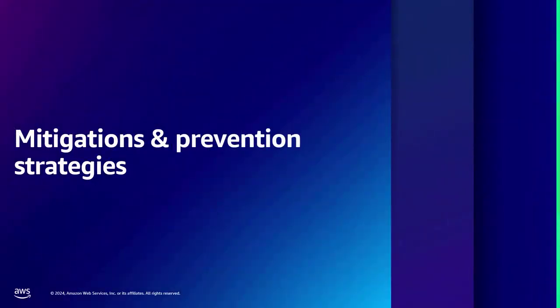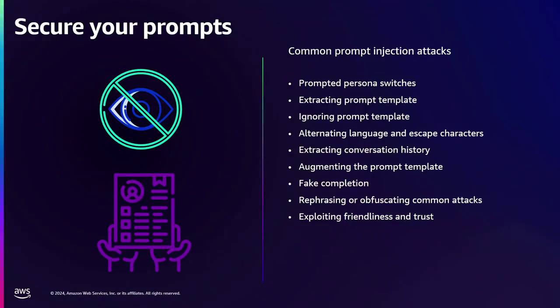Let's look at some mitigation and prevention strategies. Prompt injection attacks can be classified as persona switches, behavior manipulation, or prompt augmentation, where an actor changes your prompt so the application responds on topics you don't want. Another aspect is sensitive information disclosure — a malicious actor may try to steal the prompt template itself, either to curate more sophisticated attacks or to access sensitive information in the template. Someone can also trick your application to release conversation history of other users.